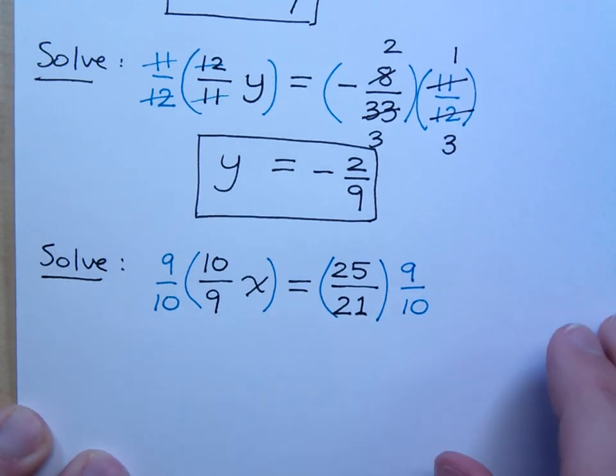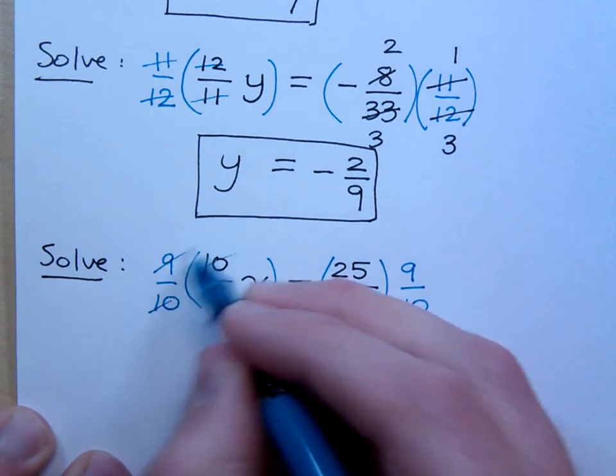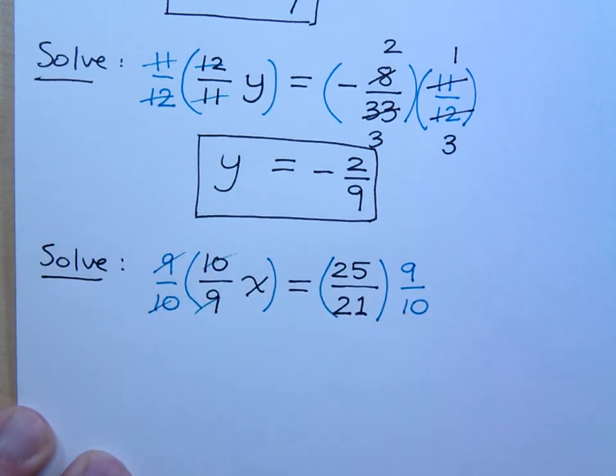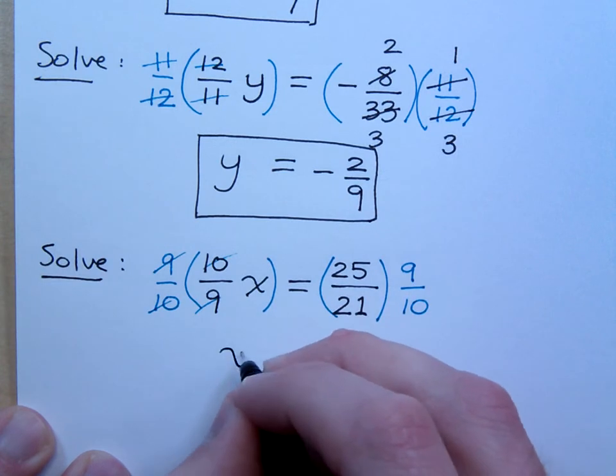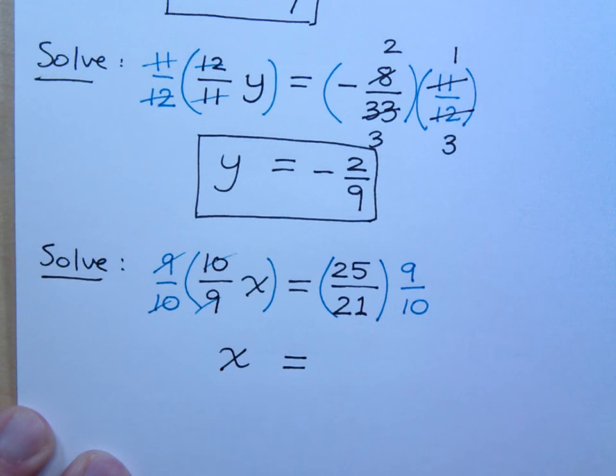So again, I'm multiplying a fraction times this reciprocal, so the 10's reduced to 1, the 9's reduced to 1, and I have what? Shouldn't that be just the variable, like 1x? Do I need to write the 1 in front of the x? No. It is understood to have a coefficient of 1. Not that x equals 1, but its coefficient is 1. On the right side, it's just an exercise in, can you reduce fractions? Can you multiply these guys? So what can I do here?